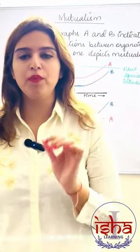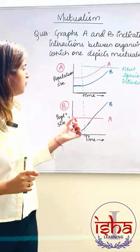A quick problem on mutualism. Given here are two graphs and you need to figure out which one of them represents a mutualistic interaction.